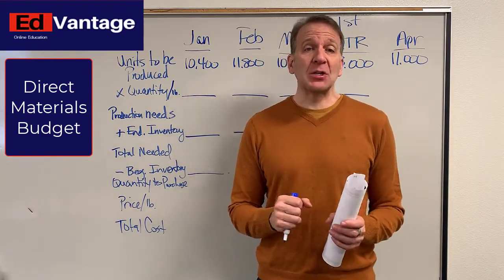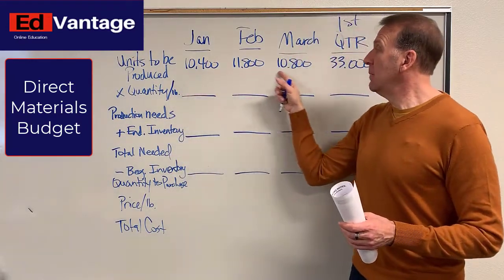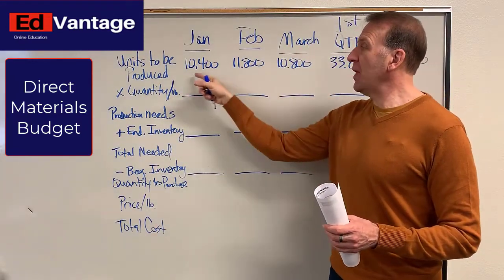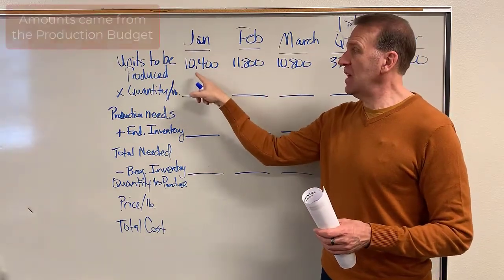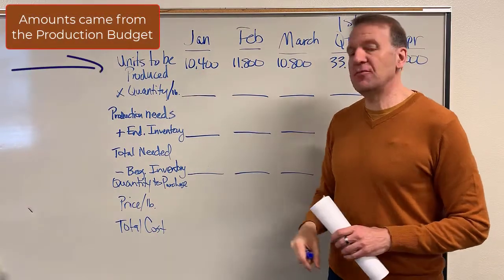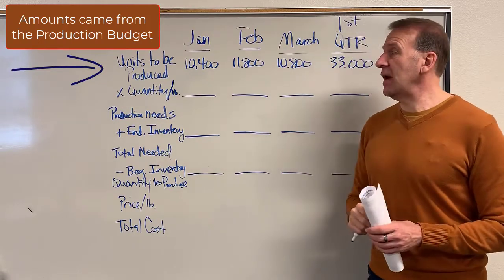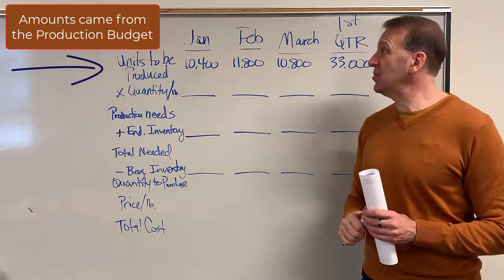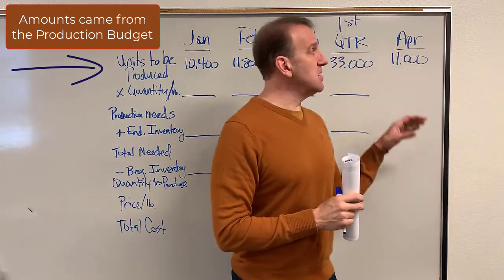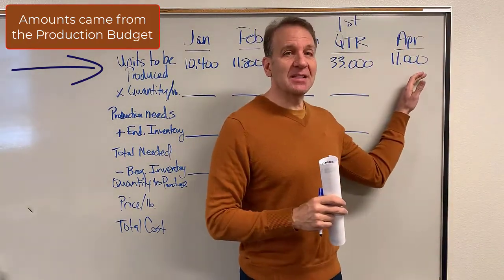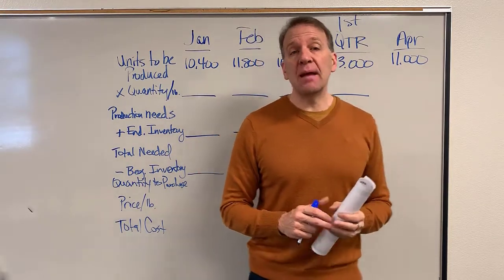Remember, we're manufacturing bags of potato chips. You can see here that we're starting this direct materials budget with what we need to produce. In our production budget, we said we need to produce 10,400 bags in January, 11,800 in February, and 10,800 bags in March for a total of 33,000 for the quarter. We're also anticipating that we need to produce 11,000 bags in April.